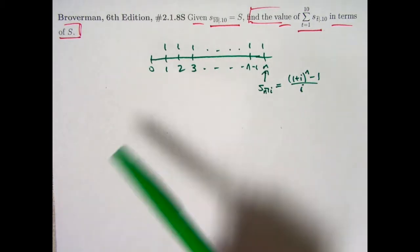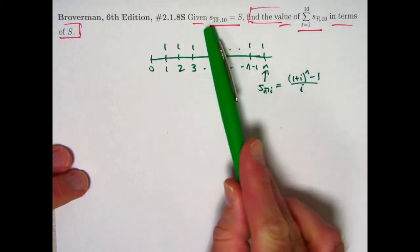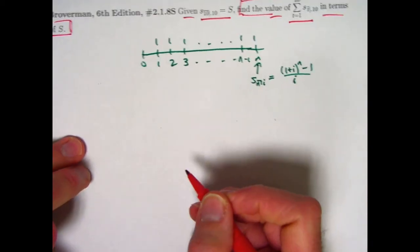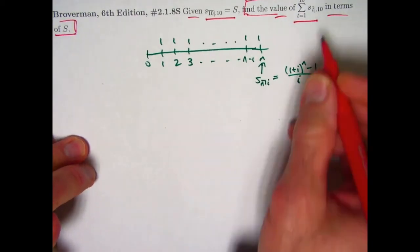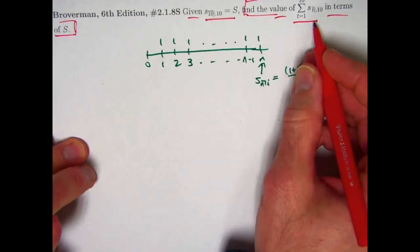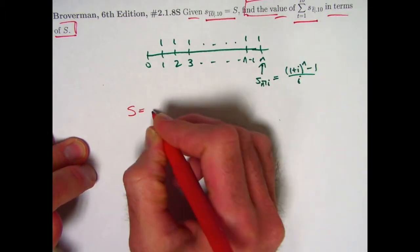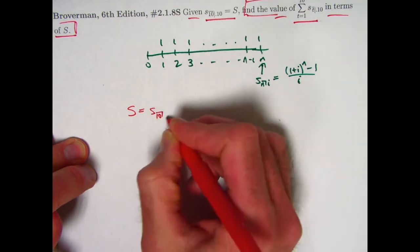In the case where n is 10 and i is 0.1, we're calling that s. You don't actually have to find the value of s to solve this problem. You're just trying to get an algebraic expression for this thing in terms of s. But we could find the value of s if we wanted to just to reinforce the idea of this formula.